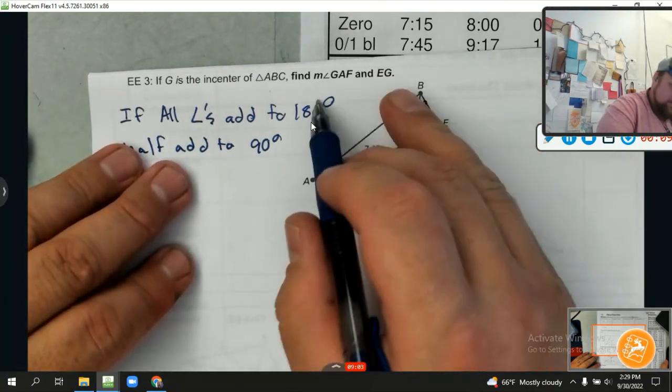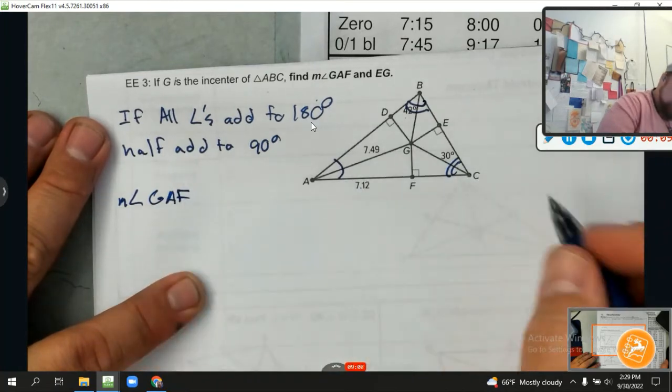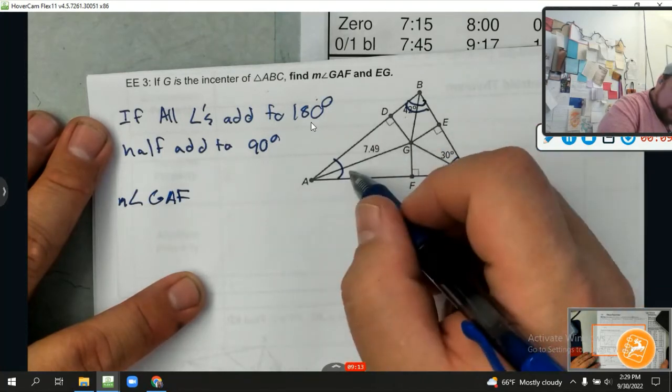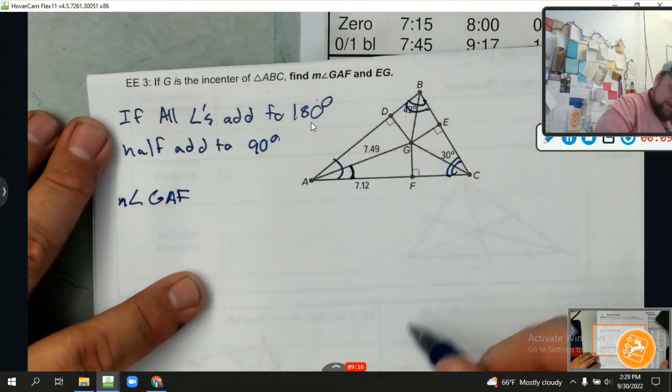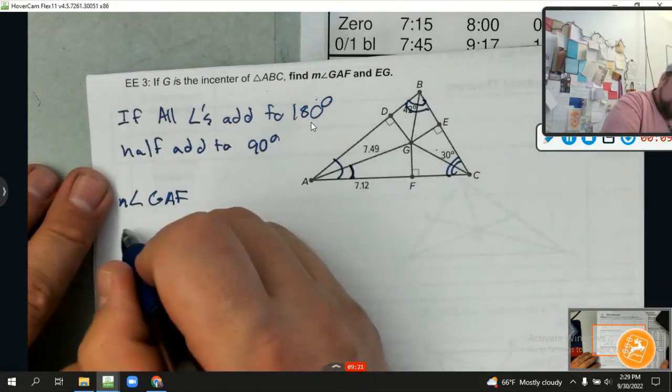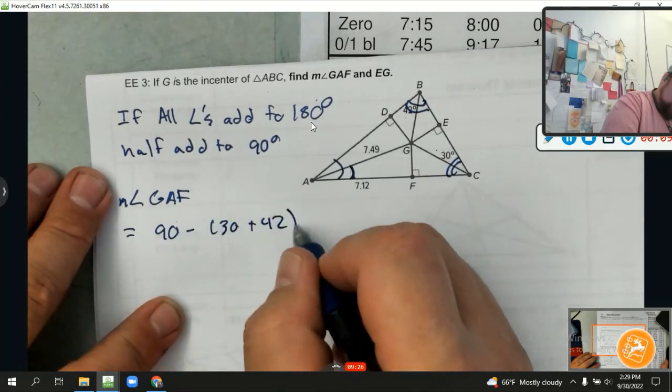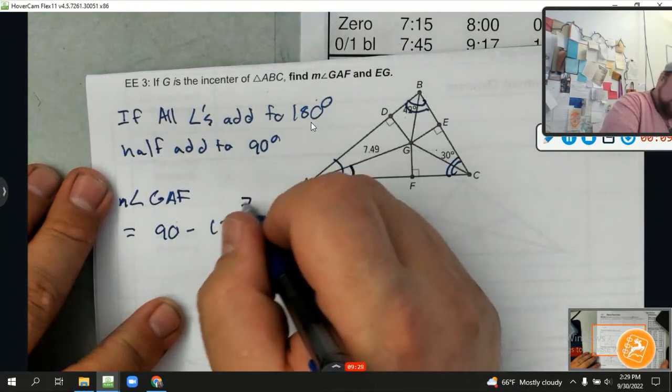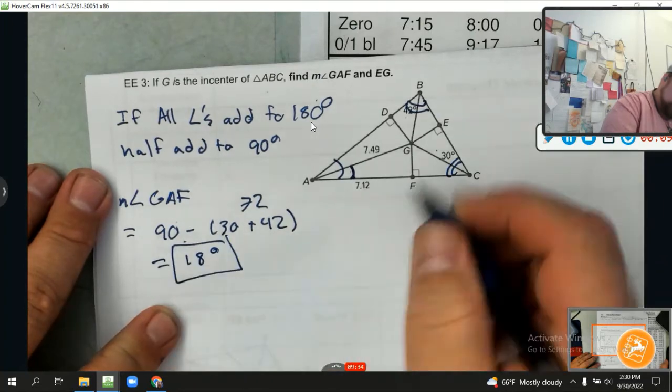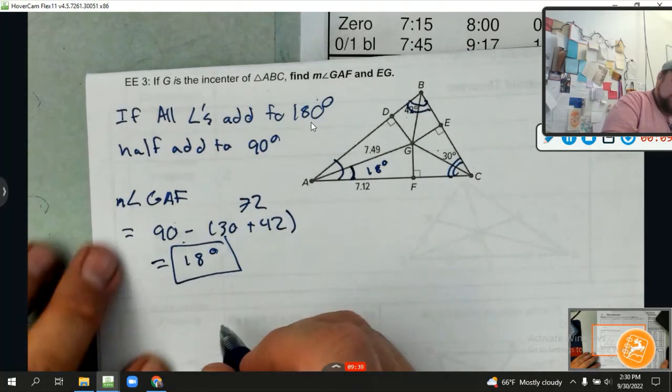90 degrees. So let's look at this. I know this half angle right here is 30 degrees, this half angle here is 42 degrees. And it wants me to find the measure of angle GAF, which is just this part right here. It's going to be equal to 30 plus 42, and then subtract that from 90. So this is going to equal 90 minus 72 degrees, which equals 18 degrees. That's the measure of angle GAF.